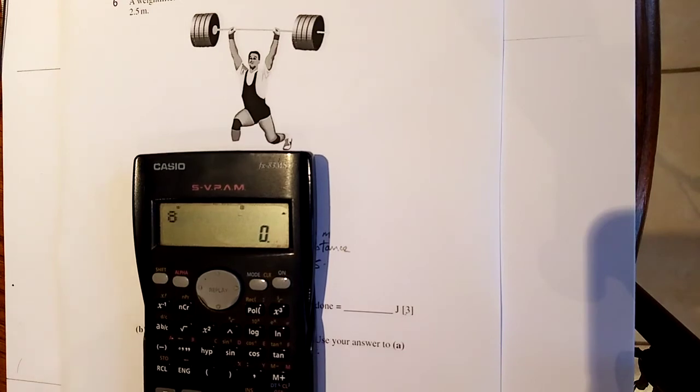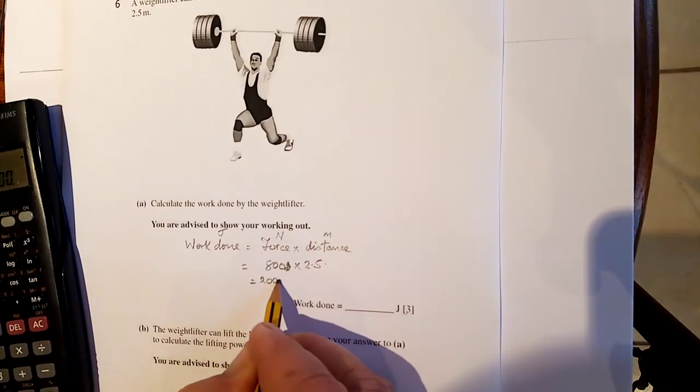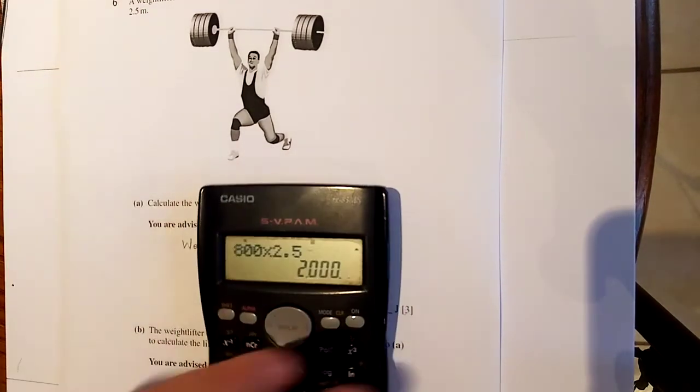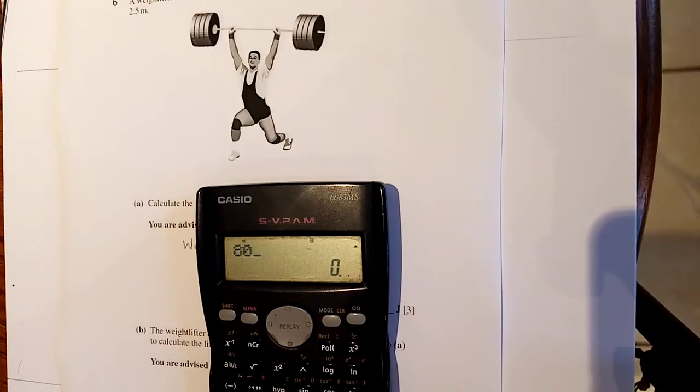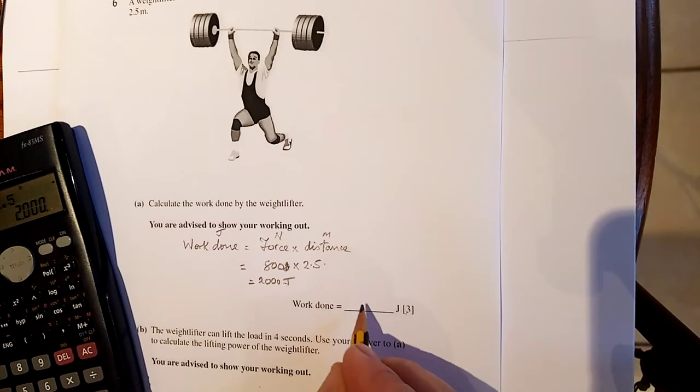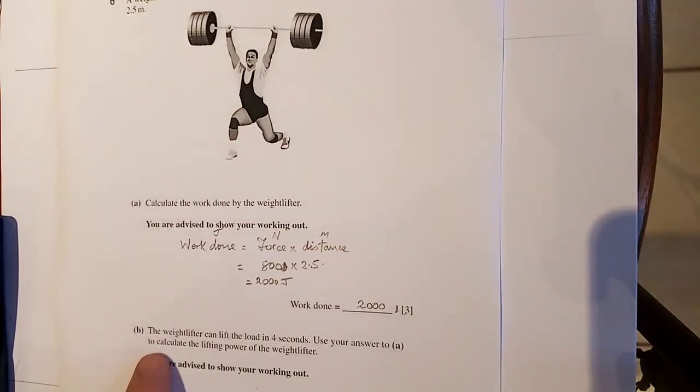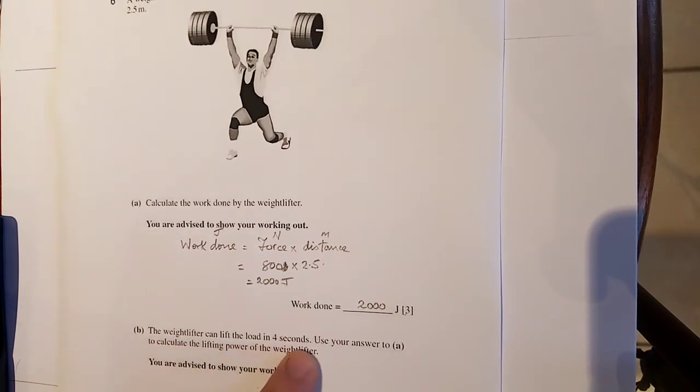800 by 2.5, 2,000. 2,000 joules. Do it again. Just check it. 800 by 2.5, 2,000 joules. So the work done is 2,000 joules. See where I've checked it twice there.